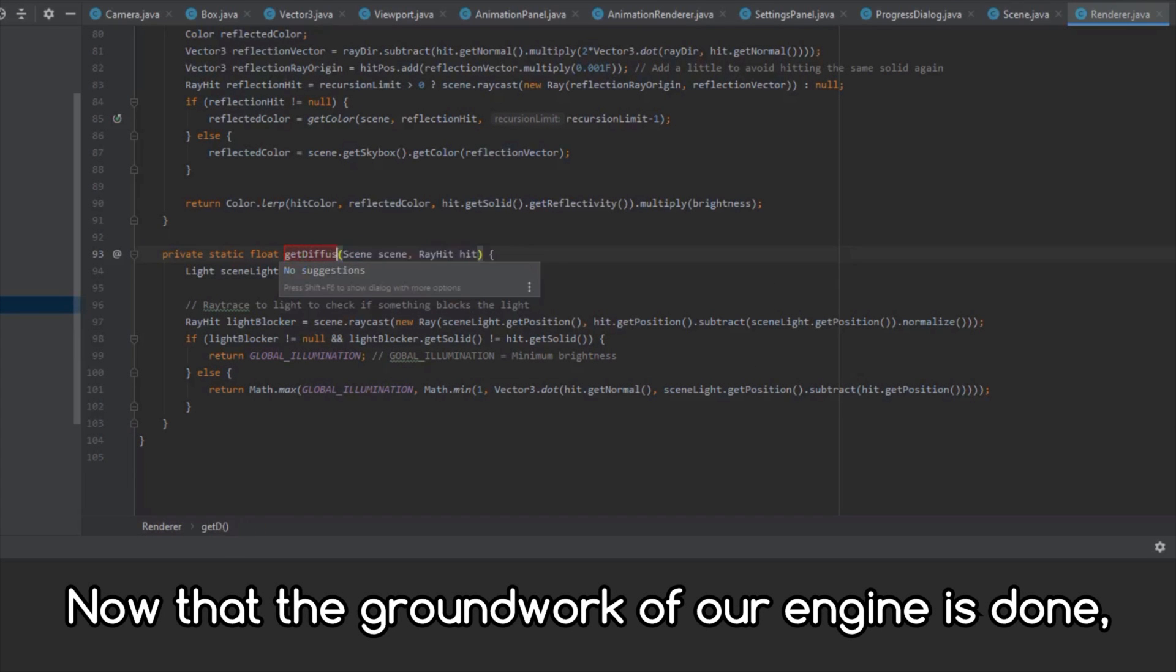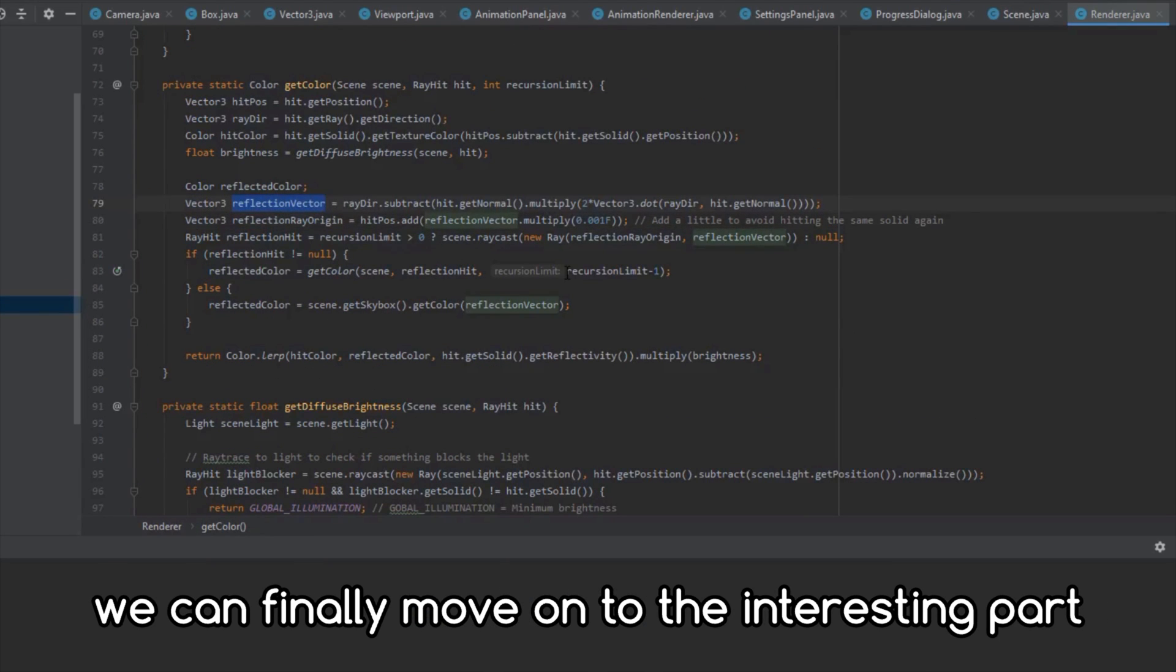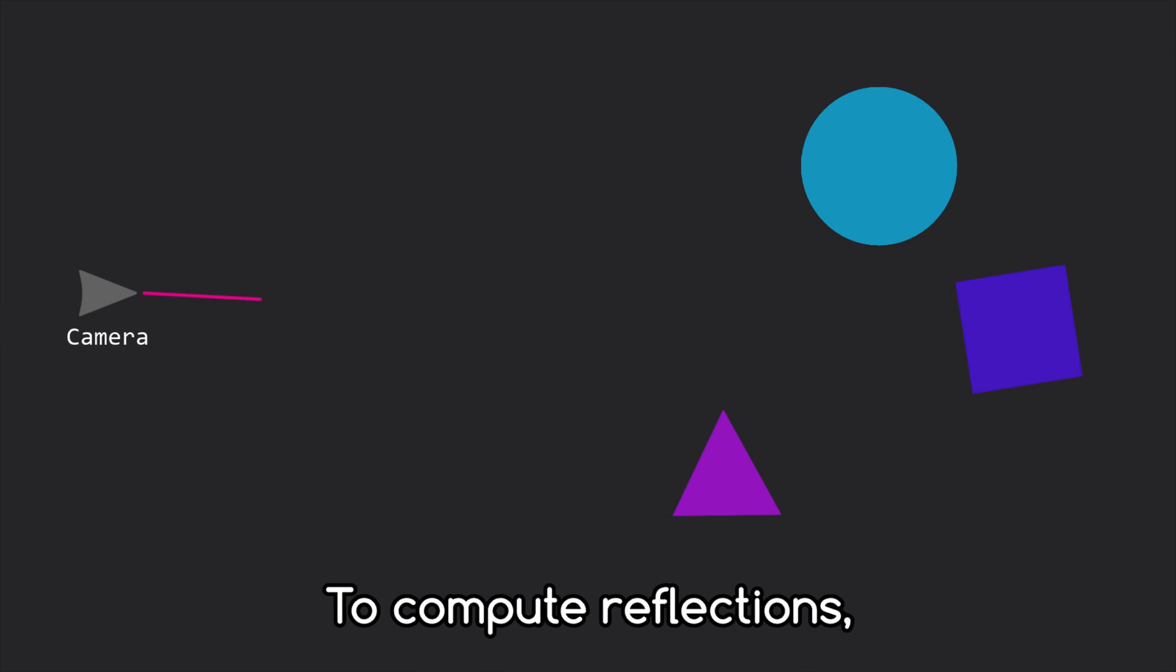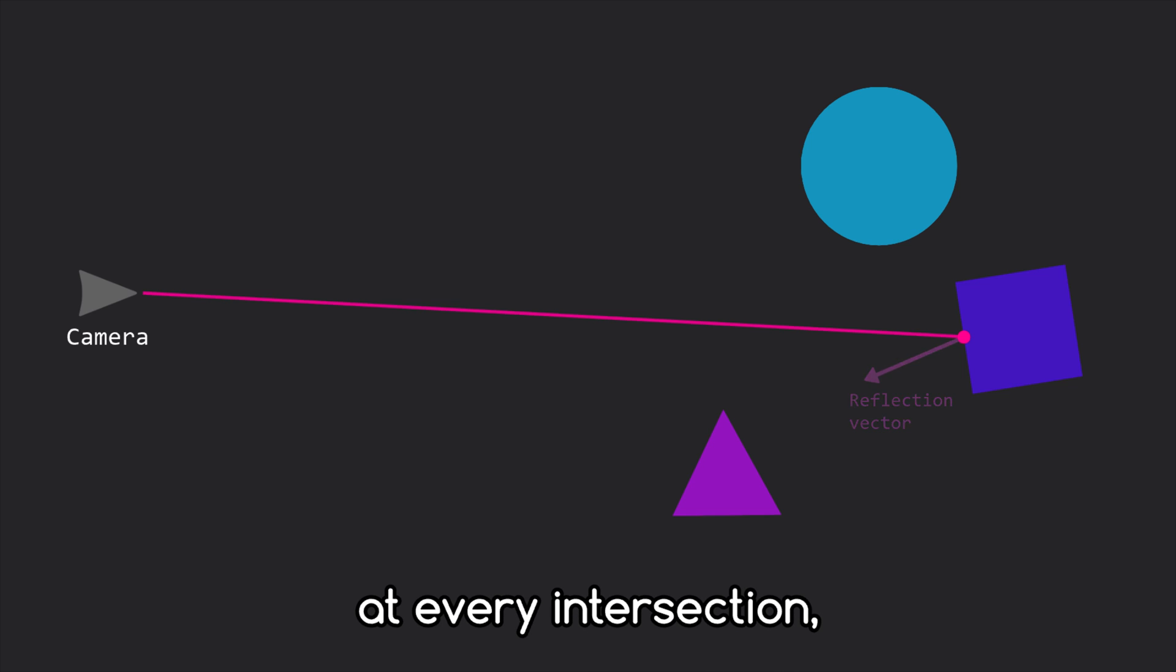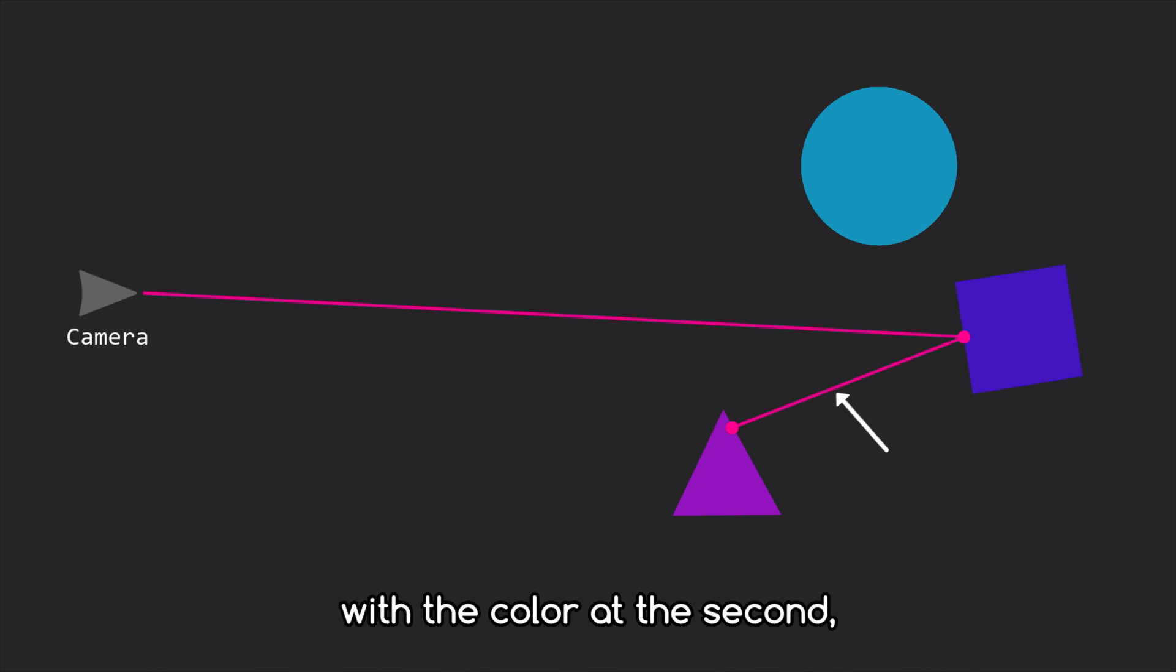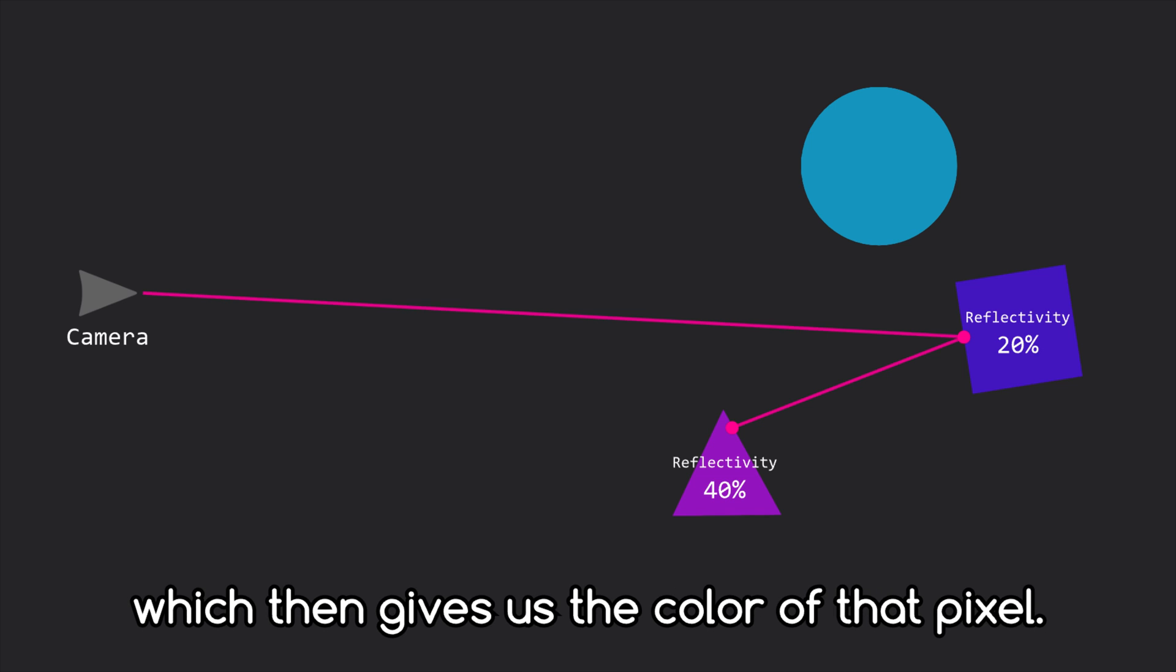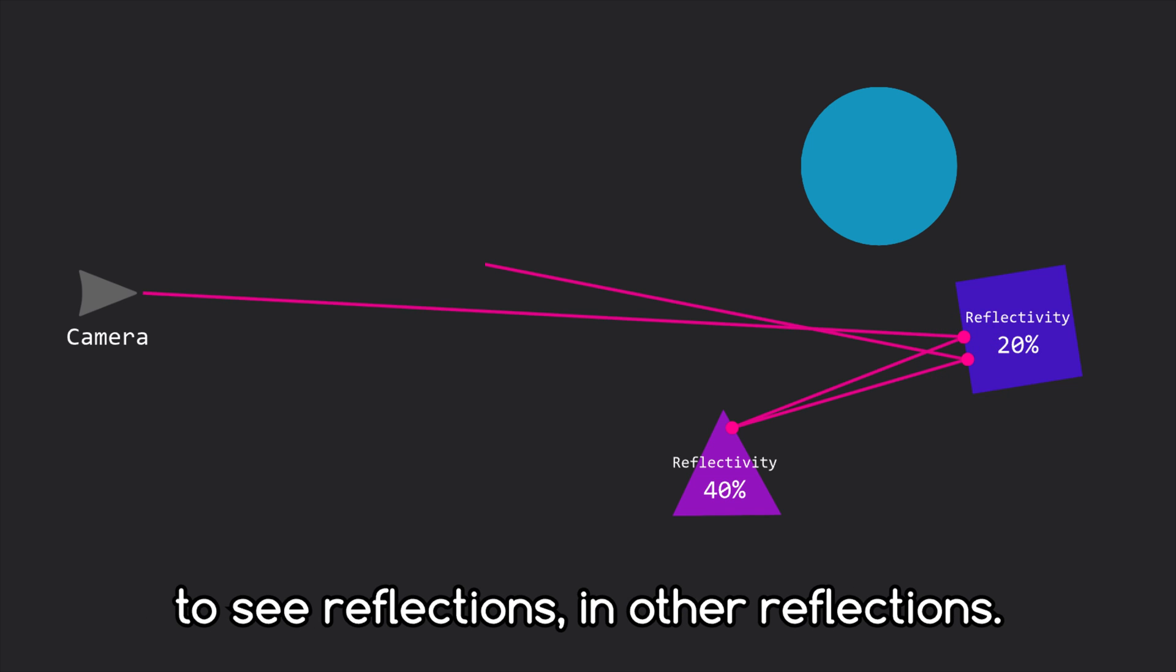Now that the groundwork of our engine is done, we can finally move on to the interesting part that really shows the power of ray tracing: reflections. To compute reflections, we have to calculate the reflection vector at every intersection and trace another ray in that direction. We then mix the color at the first intersection with the color of the second depending on the reflectivity of the hit object, which then gives us the color of that pixel. We can repeat this process recursively to see reflections in other reflections.